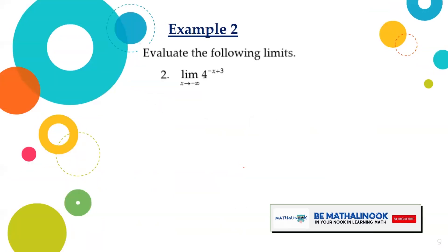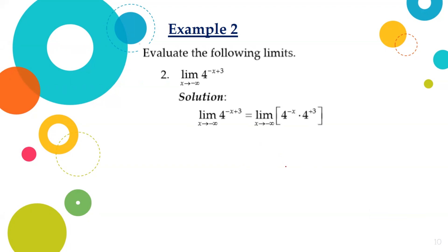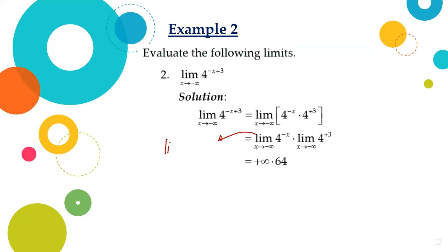Let us take another example: limit of 4^(-x+3) as x approaches negative infinity. Using laws of exponents, 4^(-x+3) can be expressed as 4^(-x) times 4^3. Moreover, this can be written as the limit of 4^(-x) times the limit of 4^3 as x approaches negative infinity. Remember that 4^(-x) is actually equal to (1/4)^x as x approaches negative infinity.